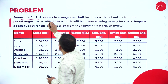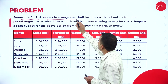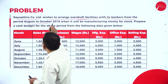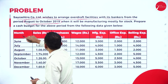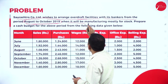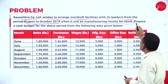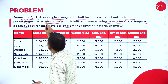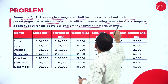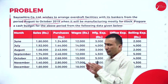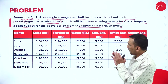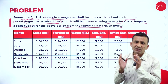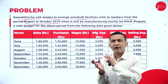Suhashtra Company Limited wishes to arrange an overdraft facility with the banker for the period August to October 2019, when it will be manufacturing mostly for stock. Prepare a cash budget for the period August to October. The following data is given below. We mainly focus on whatever information is given and classify it according to receipt and payment, or inflow and outflow.